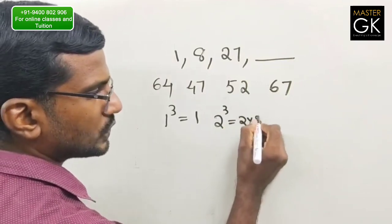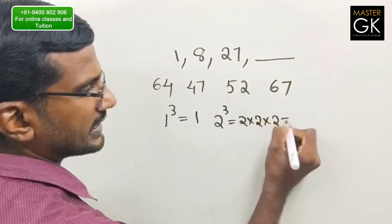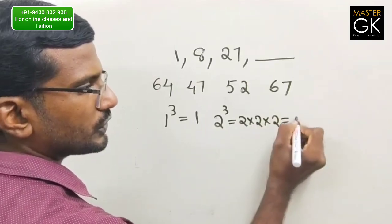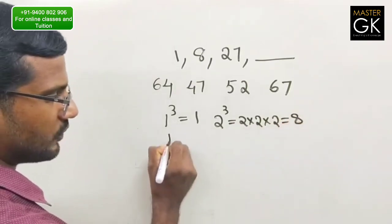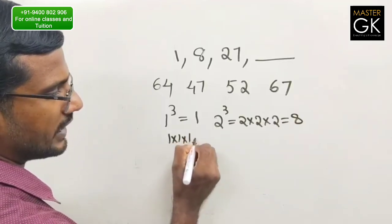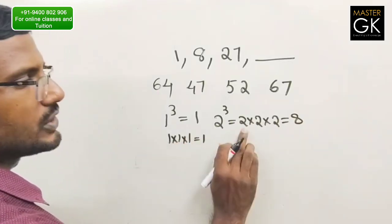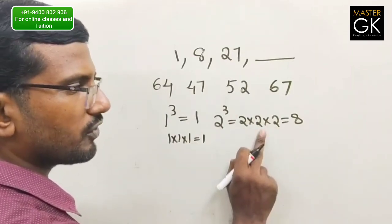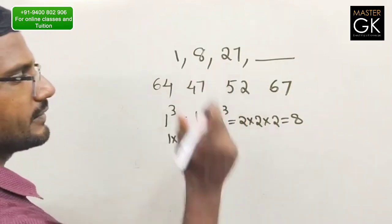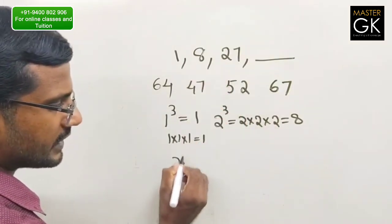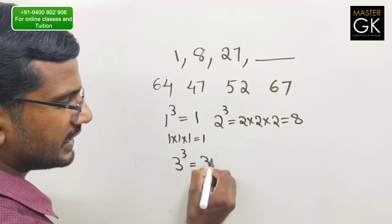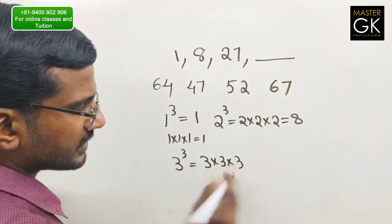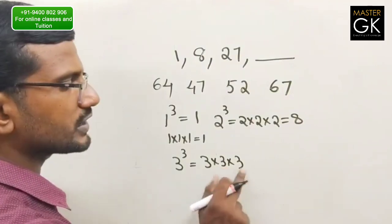2 cubed: that is 2×2×2 equals 8. Now 3 cubed: 3×3×3 equals 9×3 equals 27.